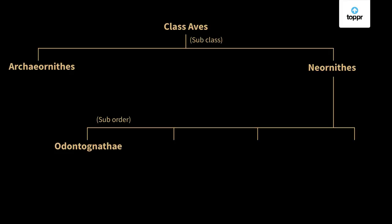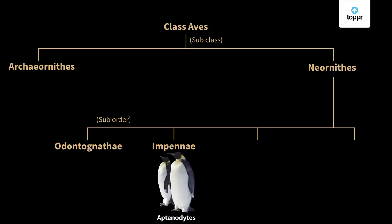The second super order is Impennae. All members of this super order are aquatic birds, so their forelimbs are modified into flippers. Teeth are absent and the sternum does not have a keel. An example is Aptenodytes — the penguin — which belongs to the super order Impennae.